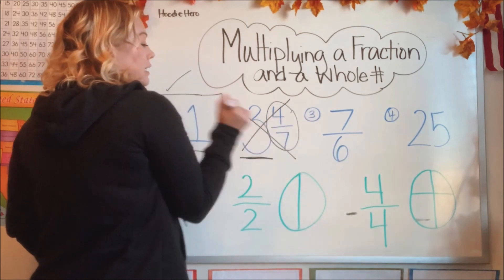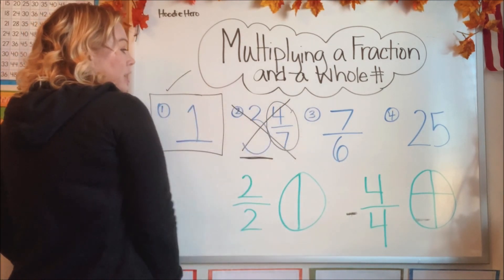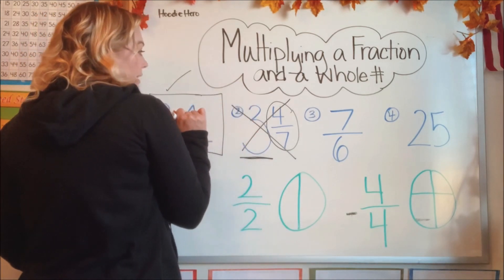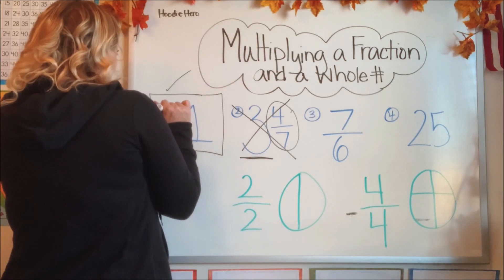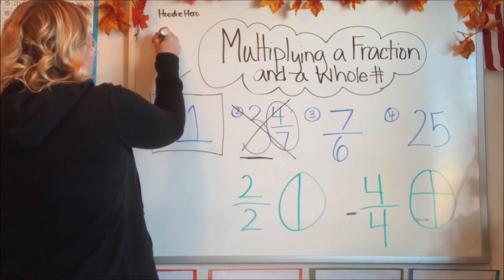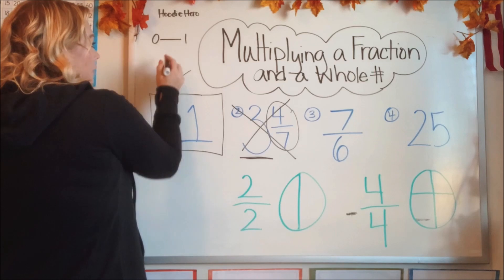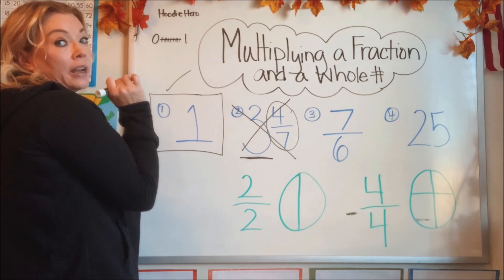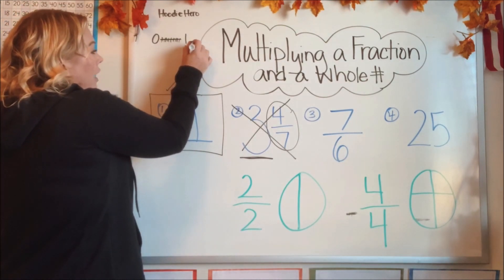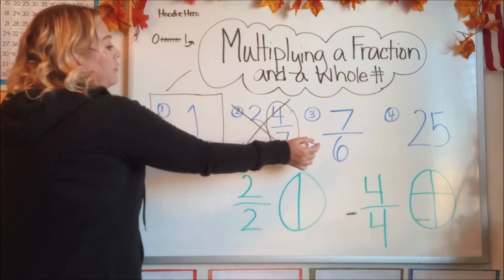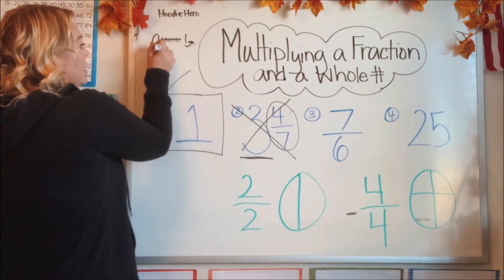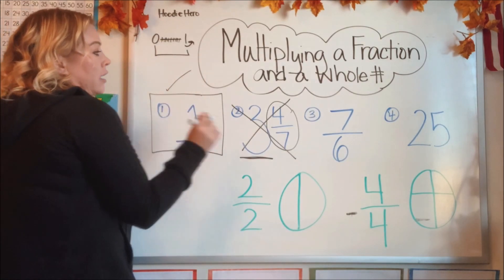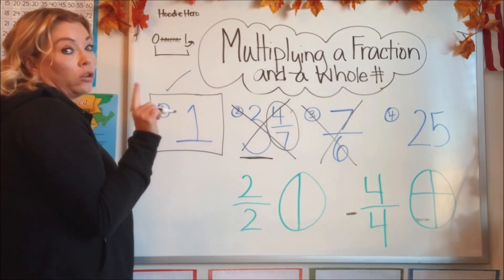Let's move on to number three. We have seven sixths. Now obviously from looking at that, that's a fraction. Is a fraction a whole number? A fraction is any number between zero and one — it's somewhere in this area of the timeline. Once we get past one they turn into mixed numbers, but a fraction by itself is between zero and one. So it's not a whole number, because whole numbers start at one. So a fraction is not a whole number.